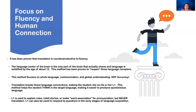This method focuses on whole language, communication, and global understanding — not accuracy. We are a strong CI method and we use a lot of comprehensible input without translation. Translation can actually break those language connections, making a student rely on their L1, their first language. This method helps students actually think in the target language and makes it easier to produce spontaneous language later.